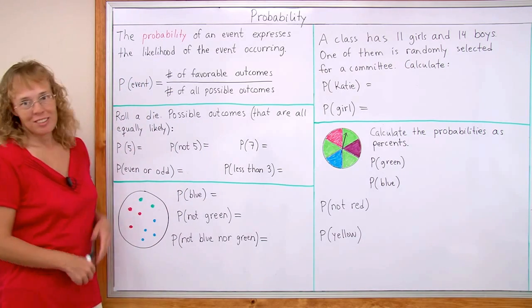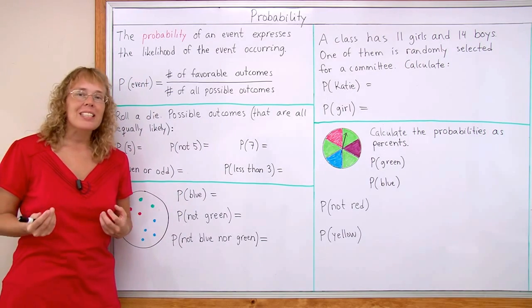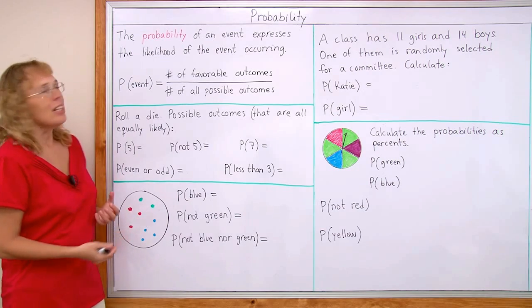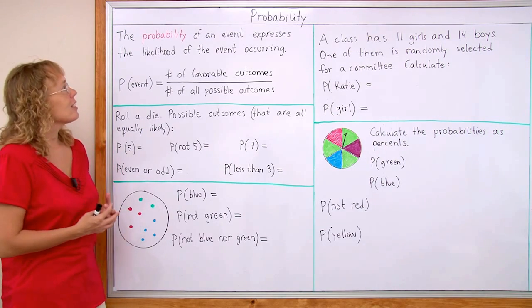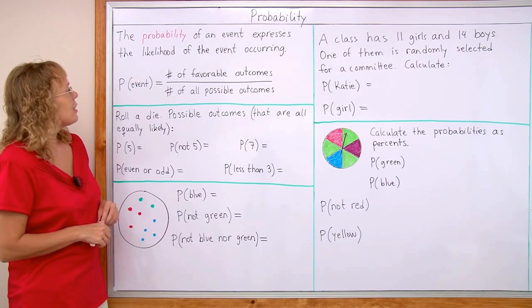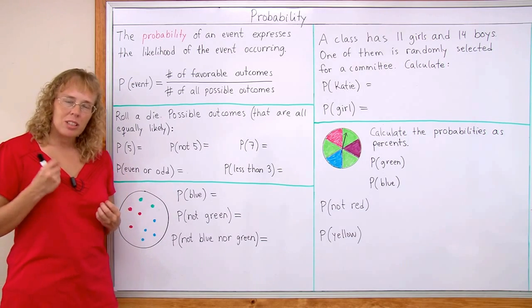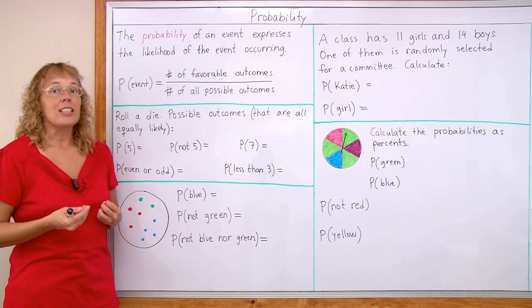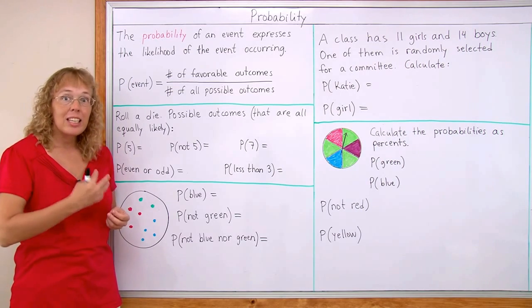Now, you probably have some kind of an idea what the probability is. We can say it this way, the probability of an event expresses the likelihood of that event occurring or happening. And in mathematics, in this lesson in particular, we are looking at events where each outcome is equally likely.